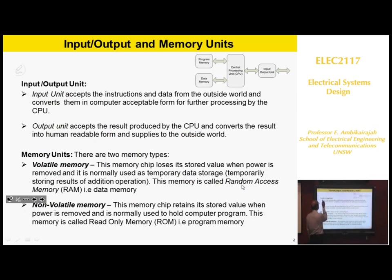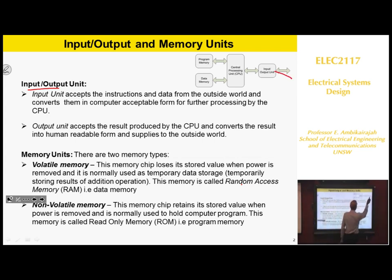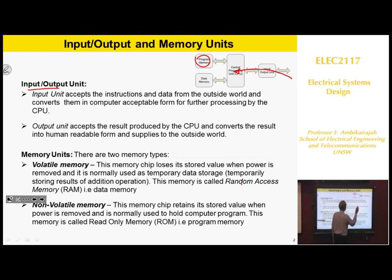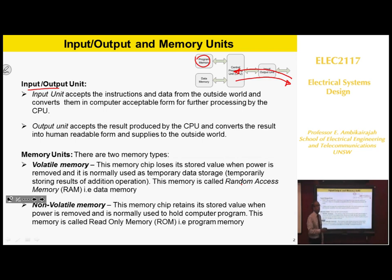Let's look at the input/output unit. The input/output unit accepts data from the outside world into the computer. The computer processes the data based on what you have written in the program, and then sends out the results through the output unit. It could be a printer, a CD drive — it will just be controlling that through the input/output unit.